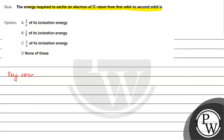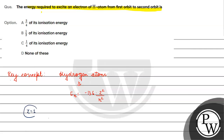The key concept for this question is: for hydrogen atom or mono-electronic species, En is basically equals to minus 13.6 Z² by n². For hydrogen atom, Z will be one. For the first energy level, the energy is minus 13.6 by 1² electron volt.